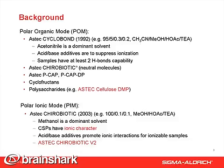The polar-organic mode is exclusively for chiral biotics only. As you can see, the mobile phase is 100% methanol with 0.1:0.1 acid and TEA. So methanol is the dominant solvent. Chiral stationary phases have ionic characters in this case. Acid-base additives promote ionic interactions for ionizable samples.